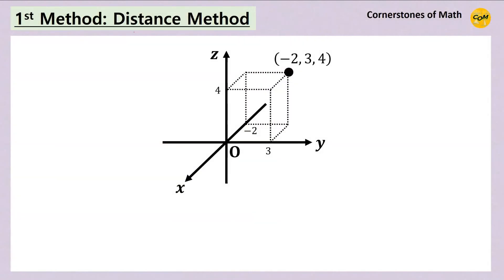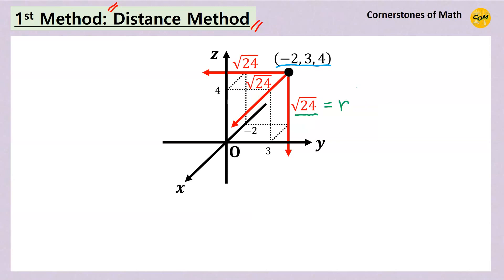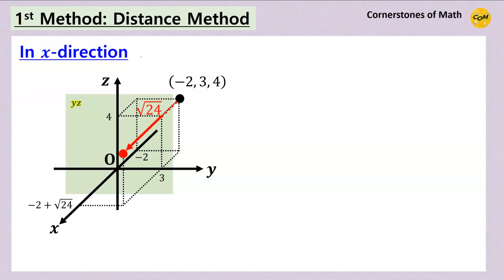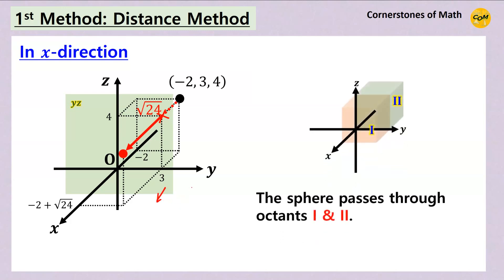The first method is what I would like to call the distance method. We have the center of the sphere at minus 2, 3, 4. We move in directions parallel to the x, y, and z-axis by a distance of square root of 24, the radius, because that's how far the sphere can go in each direction. Notice that square root of 24 is greater than 2, 3, and 4 — bigger than the magnitude of any of these coordinates.